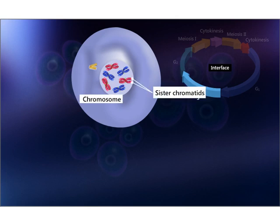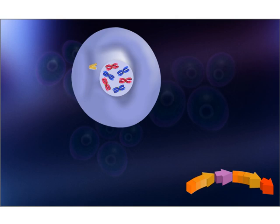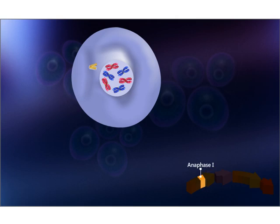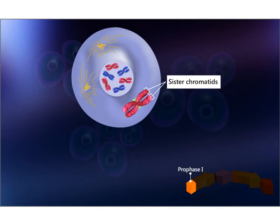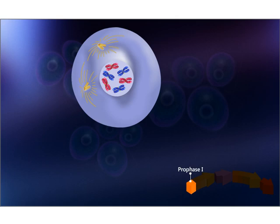Meiosis one has four phases: prophase one, metaphase one, anaphase one, and telophase one. During prophase one, centrioles change to star-shaped structures called asters and spindle fibers are formed. Sister chromatids remain attached at the centromere. Up to this point, the cell looks very similar to mitosis, but two events occur in meiosis that we do not see in mitosis, and these two events lead to genetic diversity.